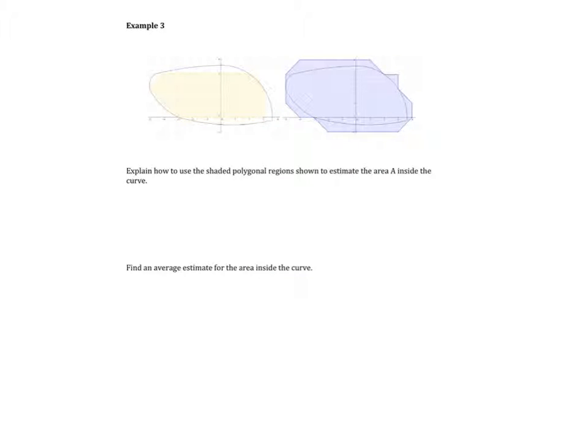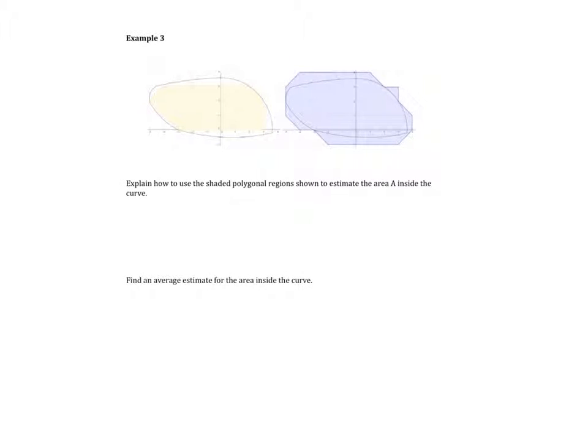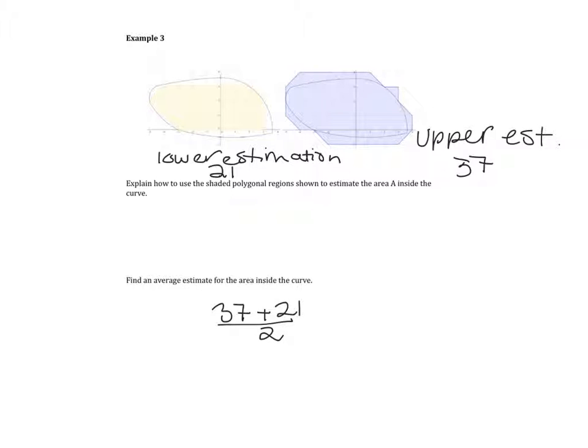I know this one's hard to see on your paper, and being that you can see it now, I'm just going to go over it. We have a lower estimation for the first picture, and I come up with 21 for that, so 21 square units. And then for the upper estimation, I come up with about 37 square units. We're going to take the average of the two, and we get an average estimate for the area inside the curve to be 29.